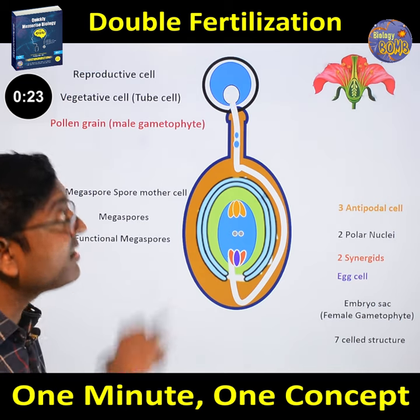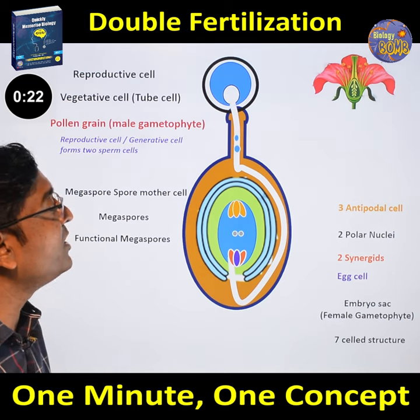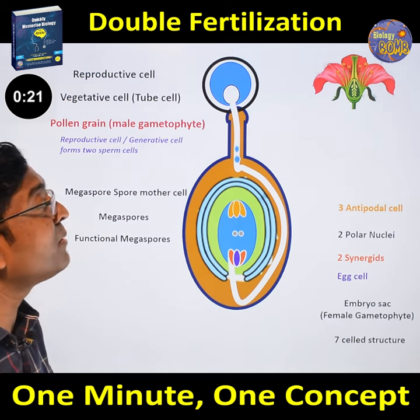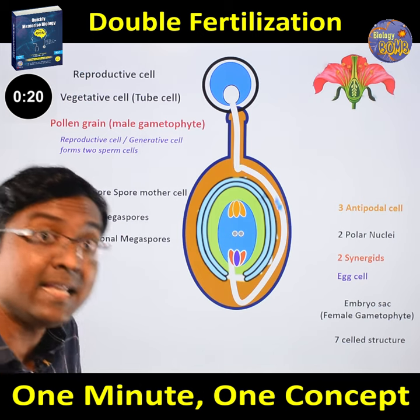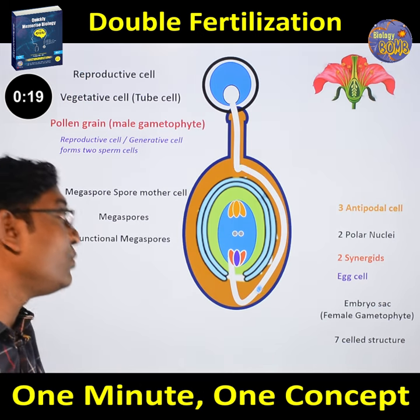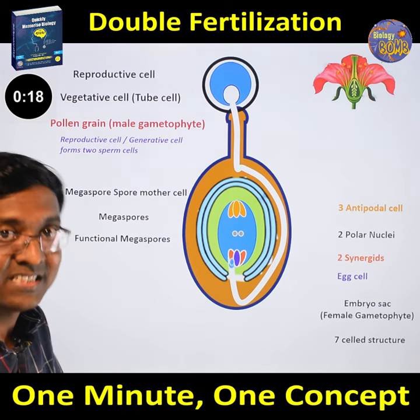The sperm cells traverse through the pollen tube. And the sperm cells are released into one of the synergids.